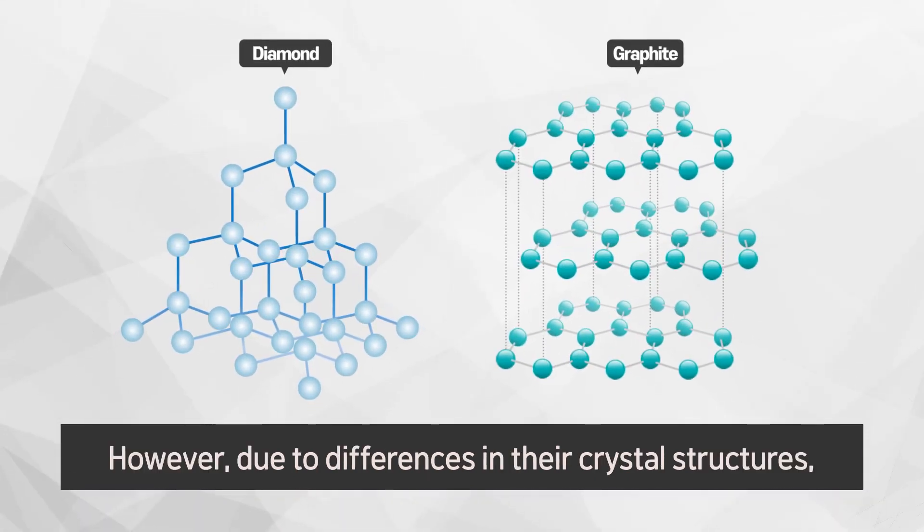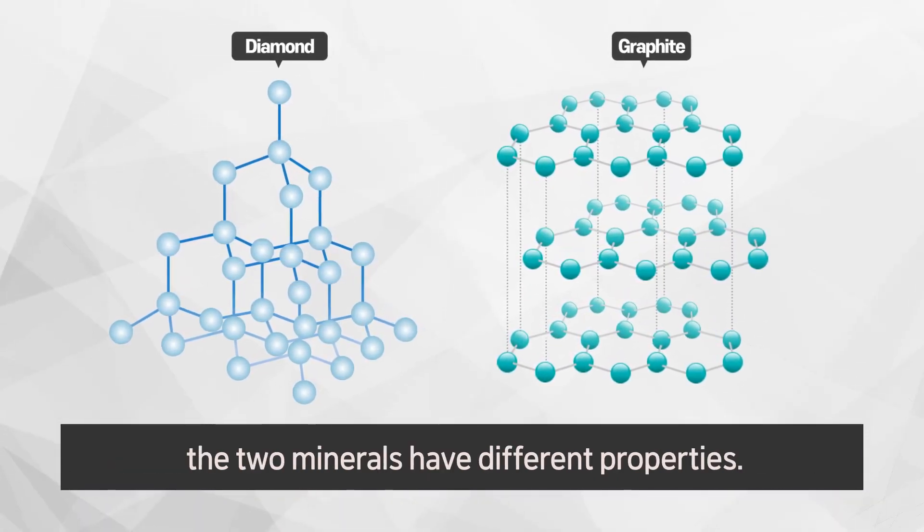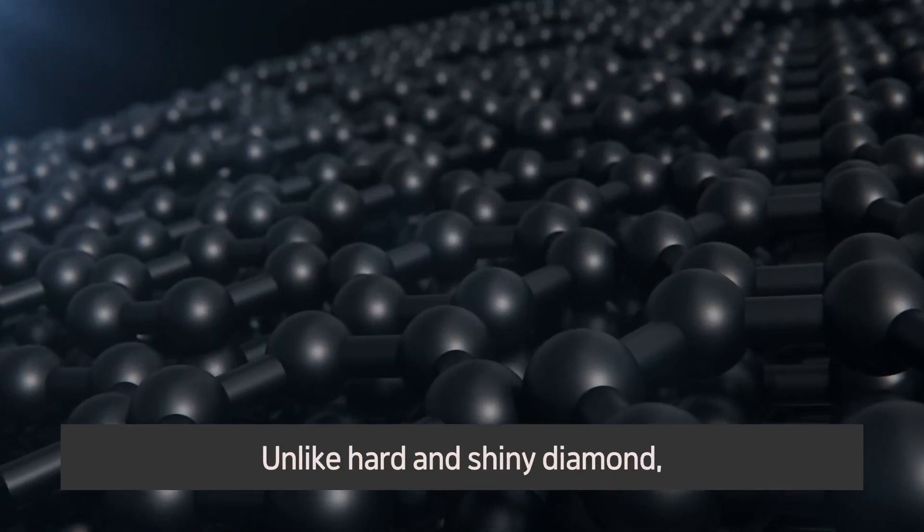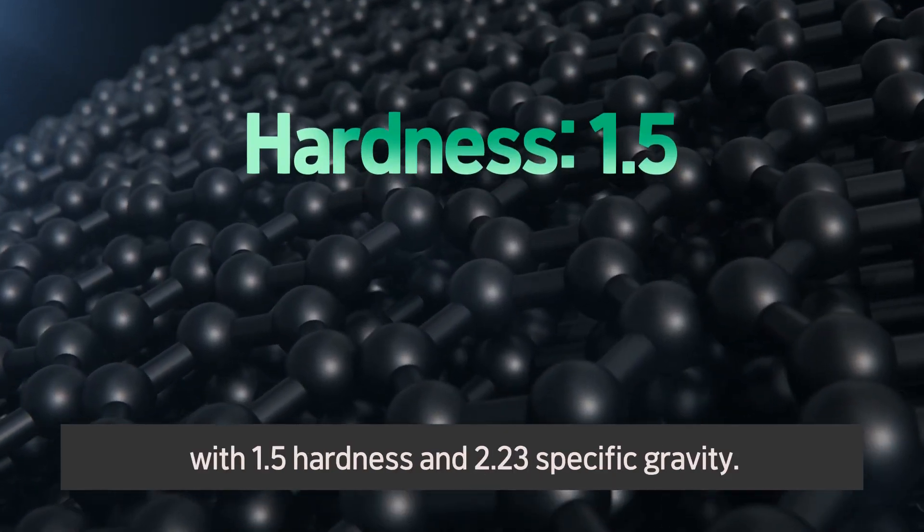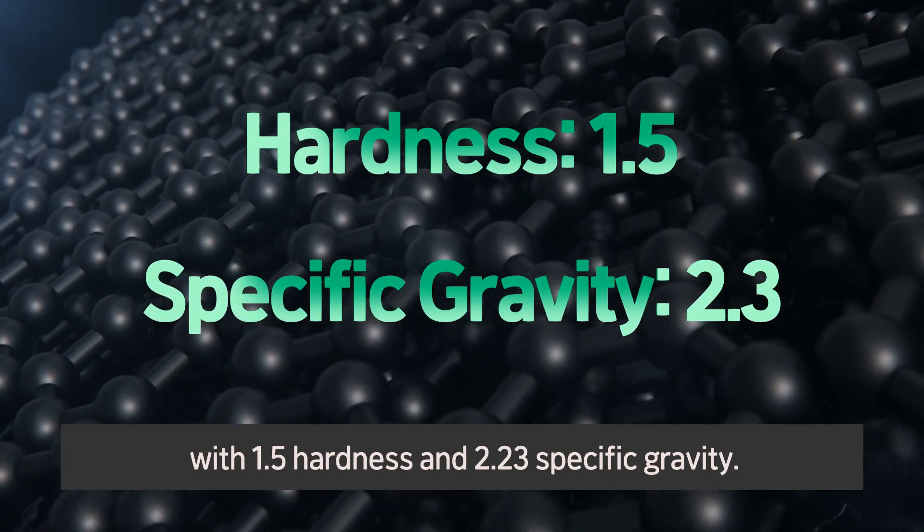However, due to differences in their crystal structures, the two minerals have different properties. Unlike hard and shiny diamond, graphite is a very soft material with 1.5 hardness and 2.23 specific gravity.